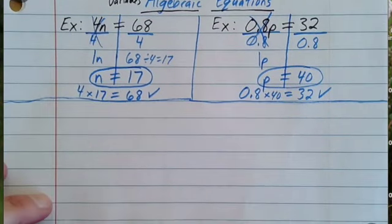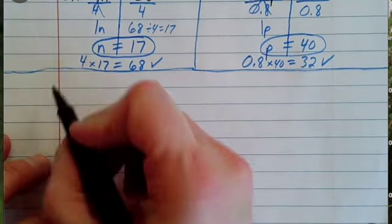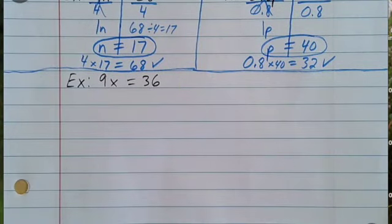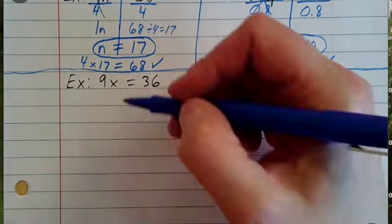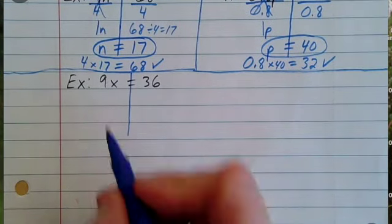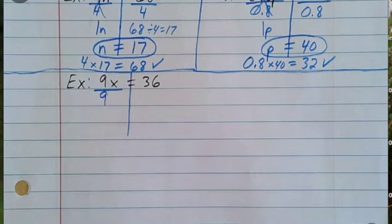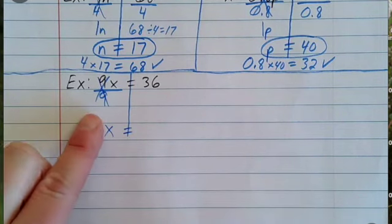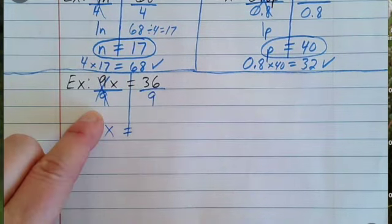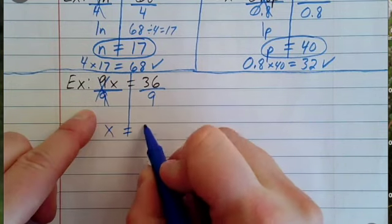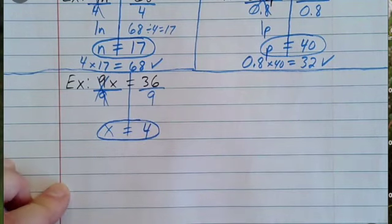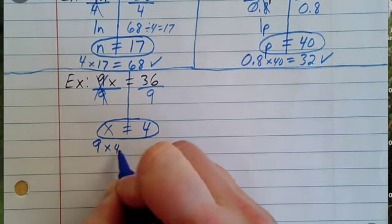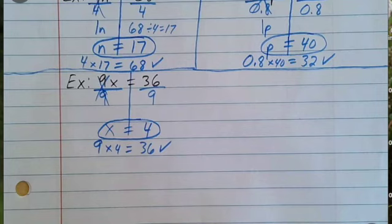My next example is 9x equals 36. 9 next to an x means times. Draw a line on the equal sign. The opposite of multiplying is dividing, so you divide by 9 to cancel it out and get x by itself. If you divide by 9 on the left, you need to divide by 9 on the right — that keeps the equation balanced. 36 divided by 9 is 4, so x equals 4. Does 9 times 4 give me 36? Yes — that's my check.